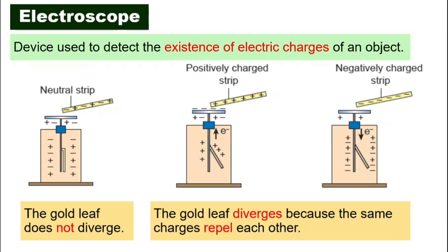The gold leaves open because of same charges repelling each other. If you bring a positively charged object near the electroscope, there are lots of protons without enough electrons. The electrons from the gold leaf run upward towards the positive object. When that happens, both gold leaves at the bottom become positively charged. Since both are positive, they repel each other — that's why the gold leaf diverges.